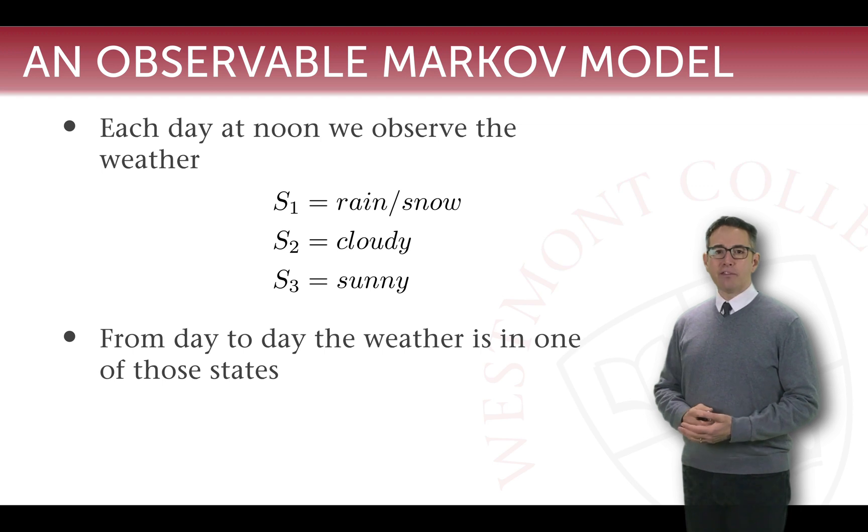Let's imagine that every day at noon we observe one of the following weather conditions: S1, S2, or S3. Three states where S1 means rain or snow, some kind of precipitation, S2 means cloudy, and S3 means sunny. For this Markov model, every day at noon is our beat. We take an observation at noon, creating a sequence of observations from one day to the next. Each day when we make that observation, the weather has to be in one of those states.